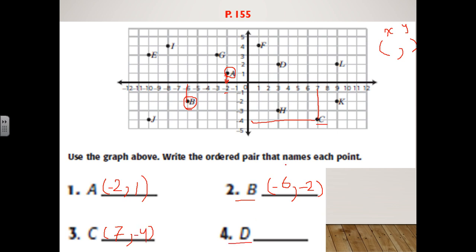The last one is point D. Let's search for it — there it is. Starting with x, it's three, and y is two. So point D is the ordered pair three, two.